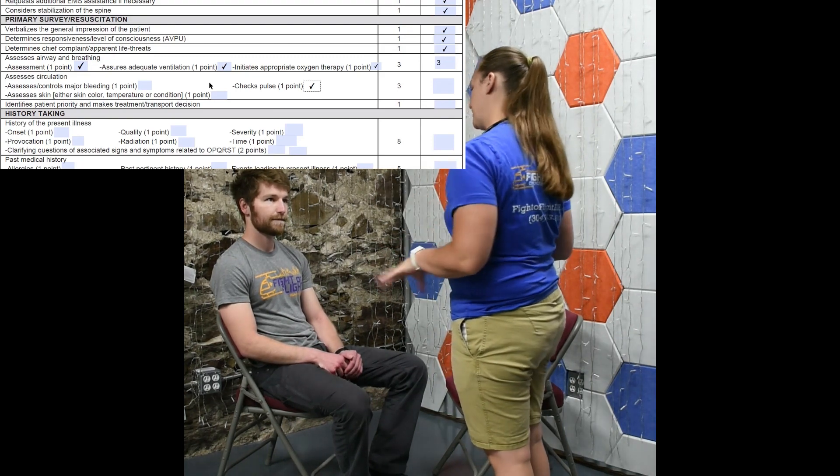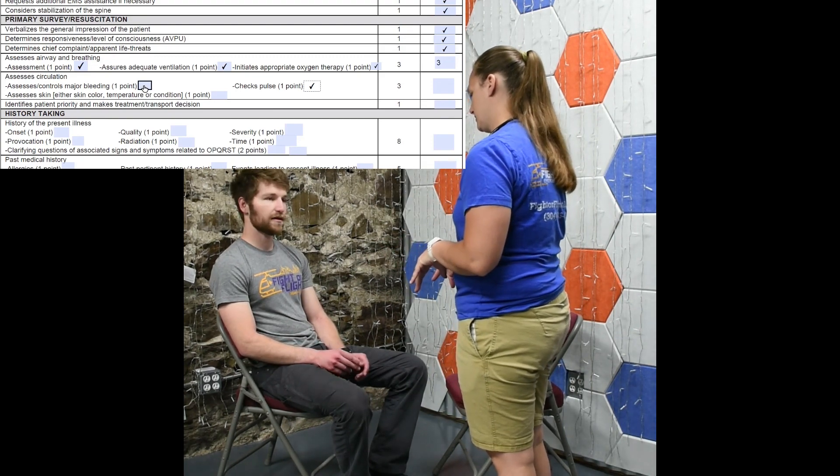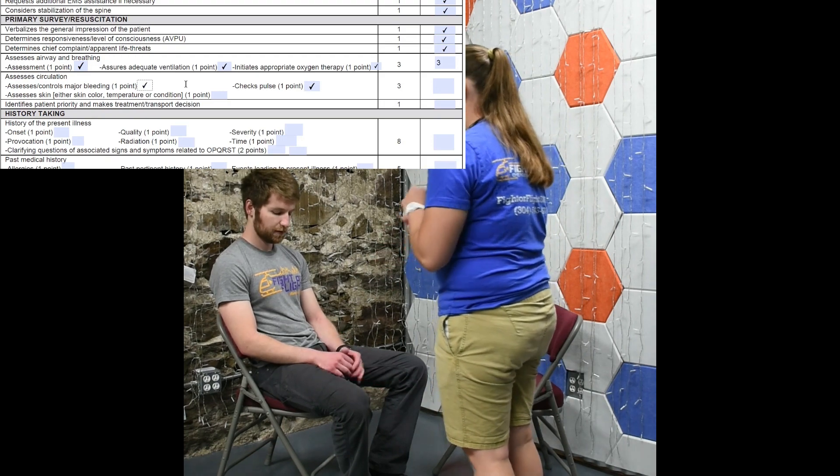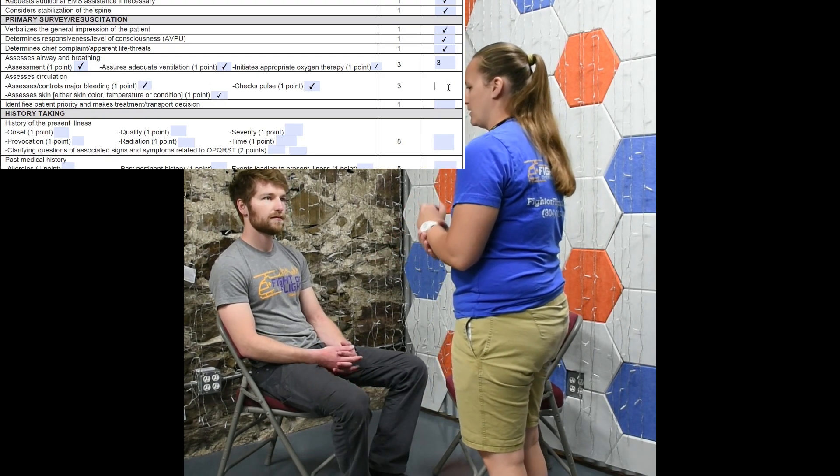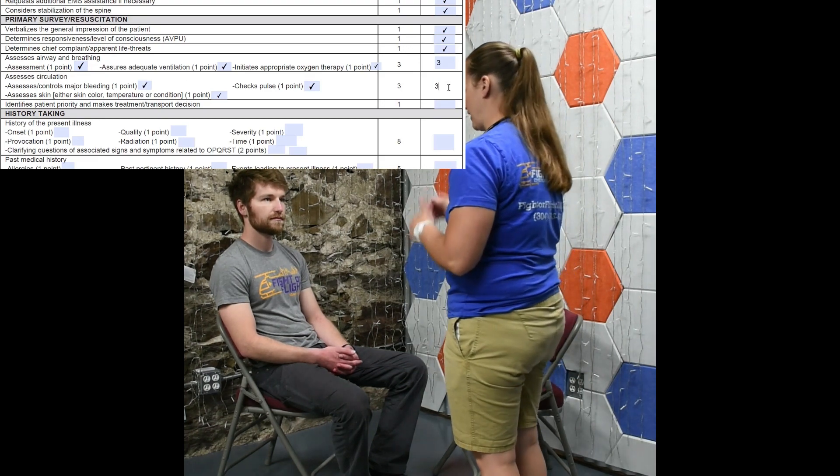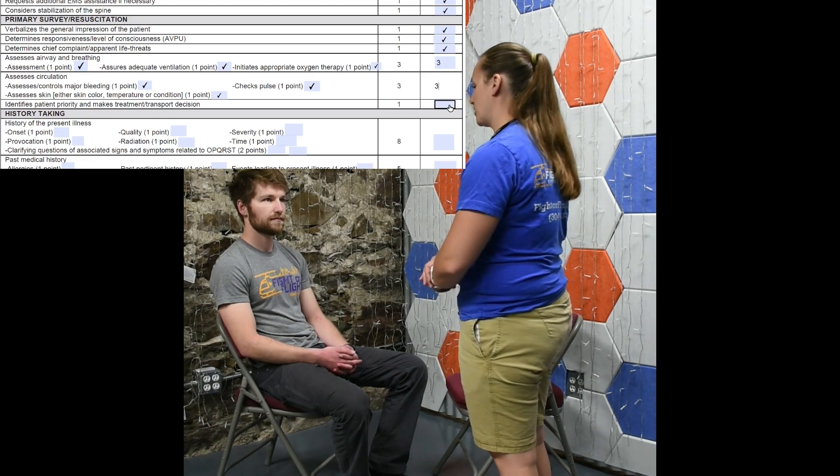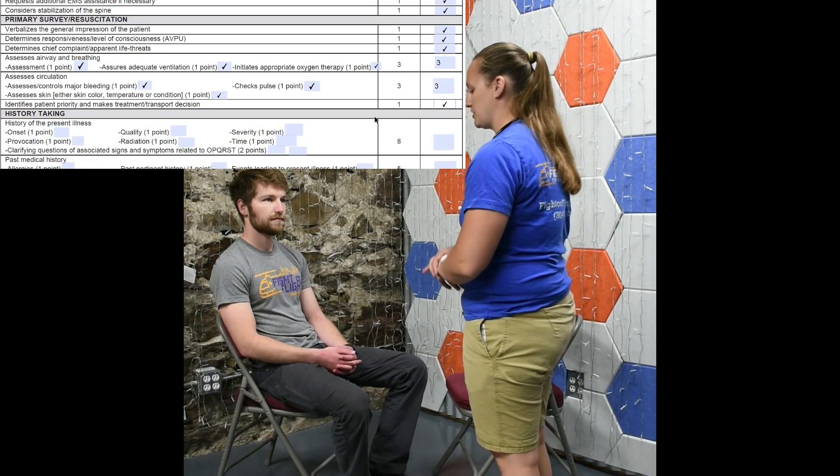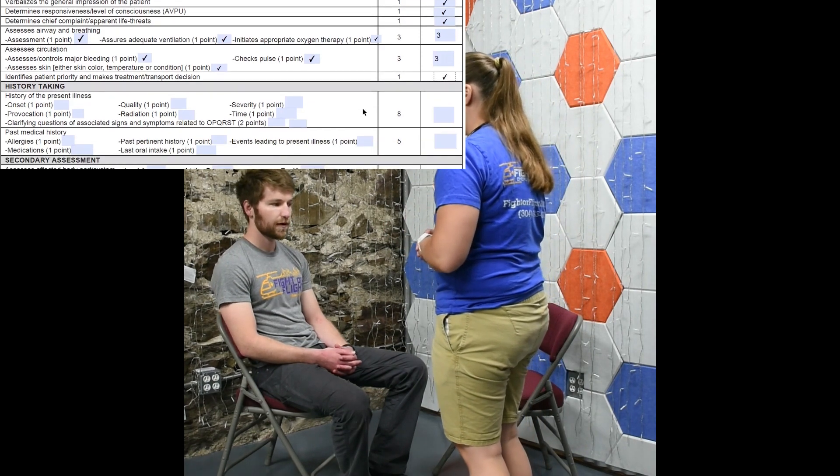So, do I see any major bleeding anywhere? You find no major bleeding. And what do I find for the skin condition? Your patient is pale, cool, and clammy. So, at this time, this is a priority patient showing signs of shock. So, we're going to transport. In addition to the oxygen, I'm also going to cover them with a blanket to keep them warm.